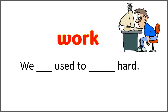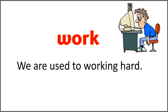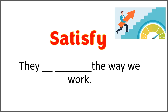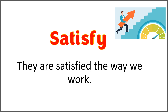The given word is 'work.' We blank used to blank hard. Use the word 'work' with 'are' to complete this sentence. We are used to working hard. The given word is 'satisfy,' and the sentence is 'they blank blank the way we work.' Use the correct form of 'satisfy' with 'are' to complete this sentence. They are satisfied with the way we work.